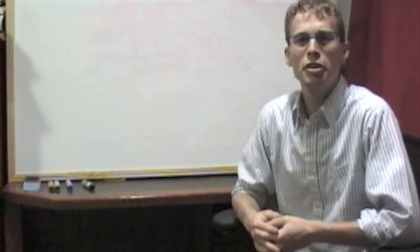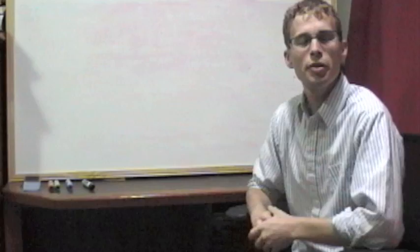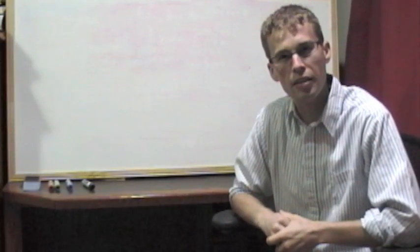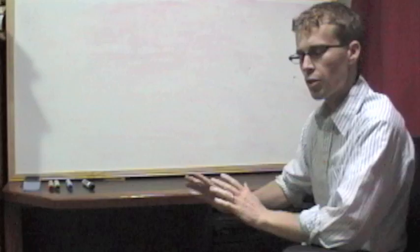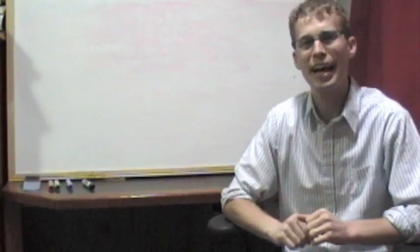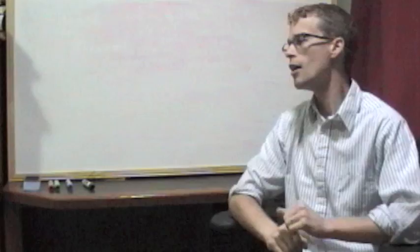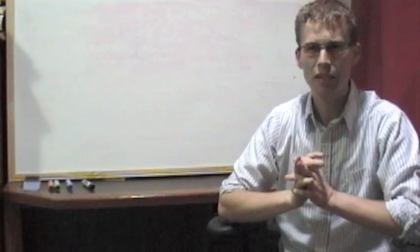All right, people, now we're going to talk about using Venn diagrams to determine whether an argument is valid. Last time, we talked about just using Venn diagrams to diagram single categorical claims. But now we're going to talk about categorical syllogisms.